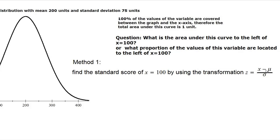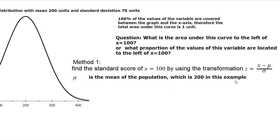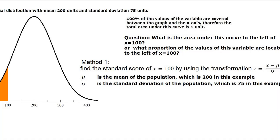That is, z is x minus mu over sigma, where mu is the mean of the population, which is 200 in this example, and sigma is the standard deviation, which is 75 in this example.